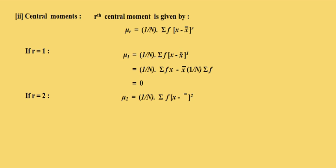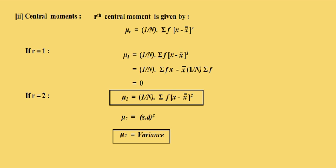Putting r equal to 2, the second central moment mu 2 equals 1 by n summation f times x minus x bar whole square. This is the formula of standard deviation squared for a given frequency distribution, so mu 2 equals standard deviation squared, which equals the variance of the frequency distribution.